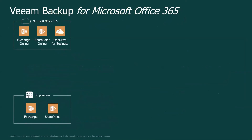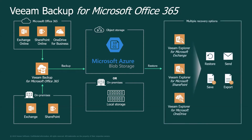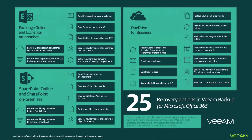Veeam Backup for Office 365 supports both on-premises Exchange and SharePoint, as well as Office 365 Exchange, SharePoint, and OneDrive for Business. Because it is software-defined, the Veeam Backup for Office 365 server can be configured anywhere — whether on-premises or as a VM within Microsoft Azure. Backups can be stored either on-premises or within Microsoft Azure Blob storage, with multiple recovery options for Exchange, SharePoint, and OneDrive. From a single Office 365 backup, Veeam provides 25 different recovery options.